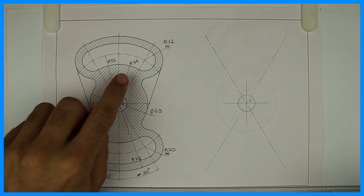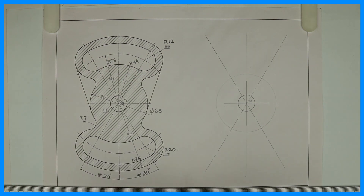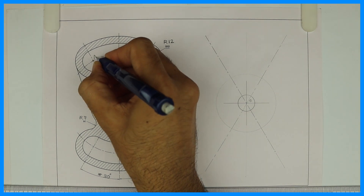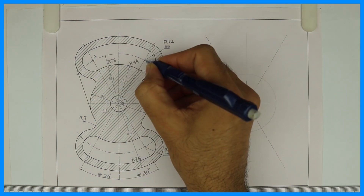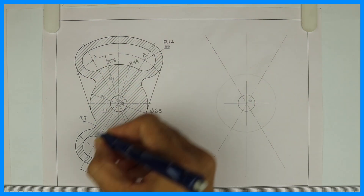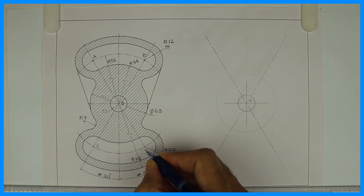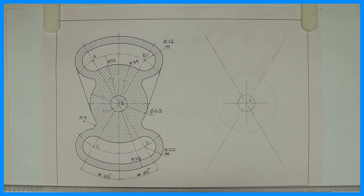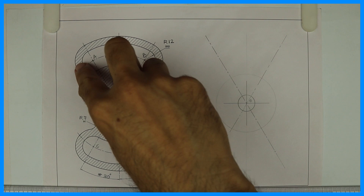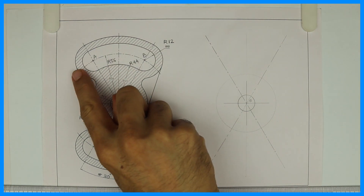After that we can draw this arc, radius 56. This is point A, this is point B, this is C, and this is D. So I can draw arc radius 56.